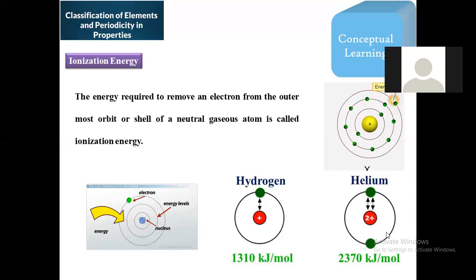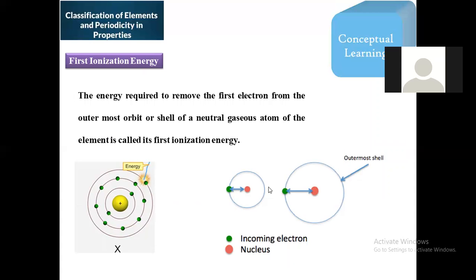To remove the two electrons present in helium — a noble gas with a completely filled configuration — we have to supply extra energy: 2370 kilojoules per mole. This is ionization potential. An atom may not be constituted with only one electron; so many electrons will be present depending on its atomic number and electronic configuration. You can remove one, two, or three electrons, giving us first ionization enthalpy, second ionization enthalpy, third ionization enthalpy, and so on.